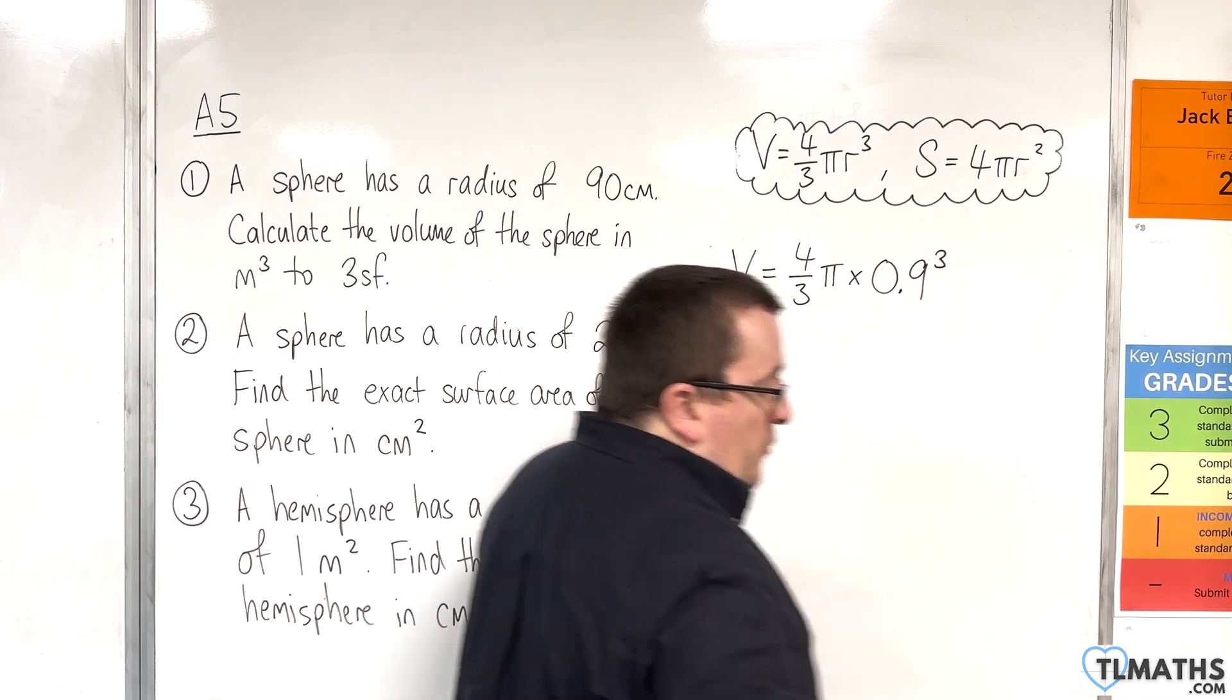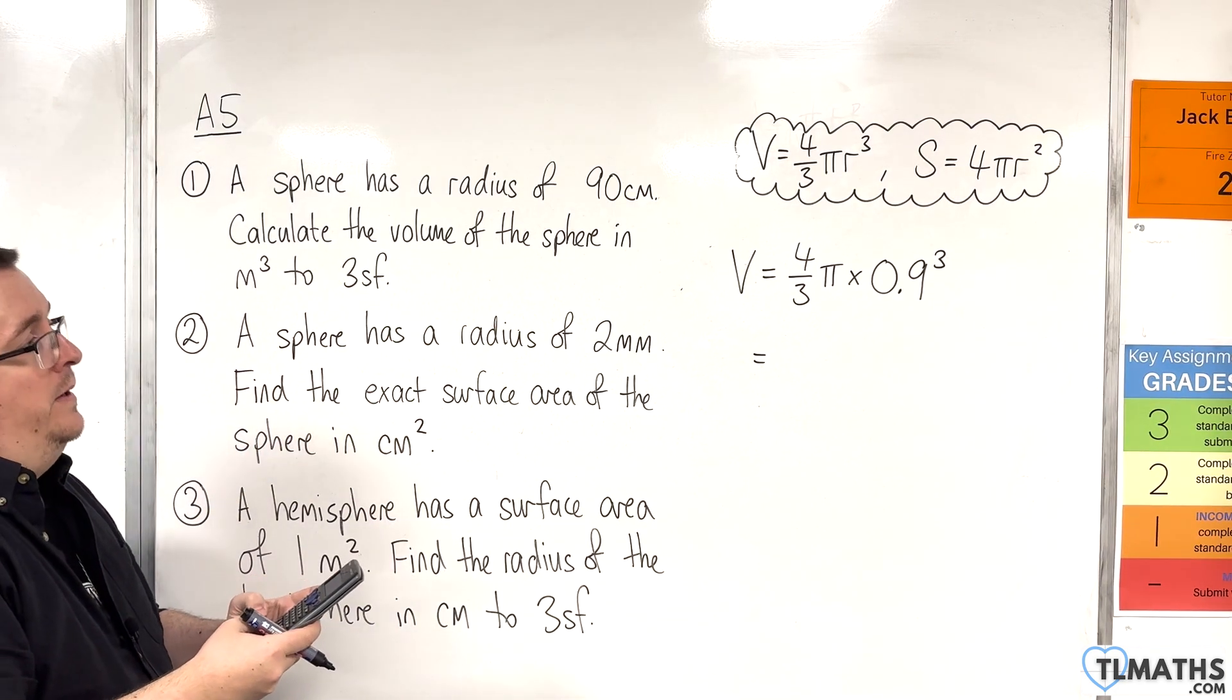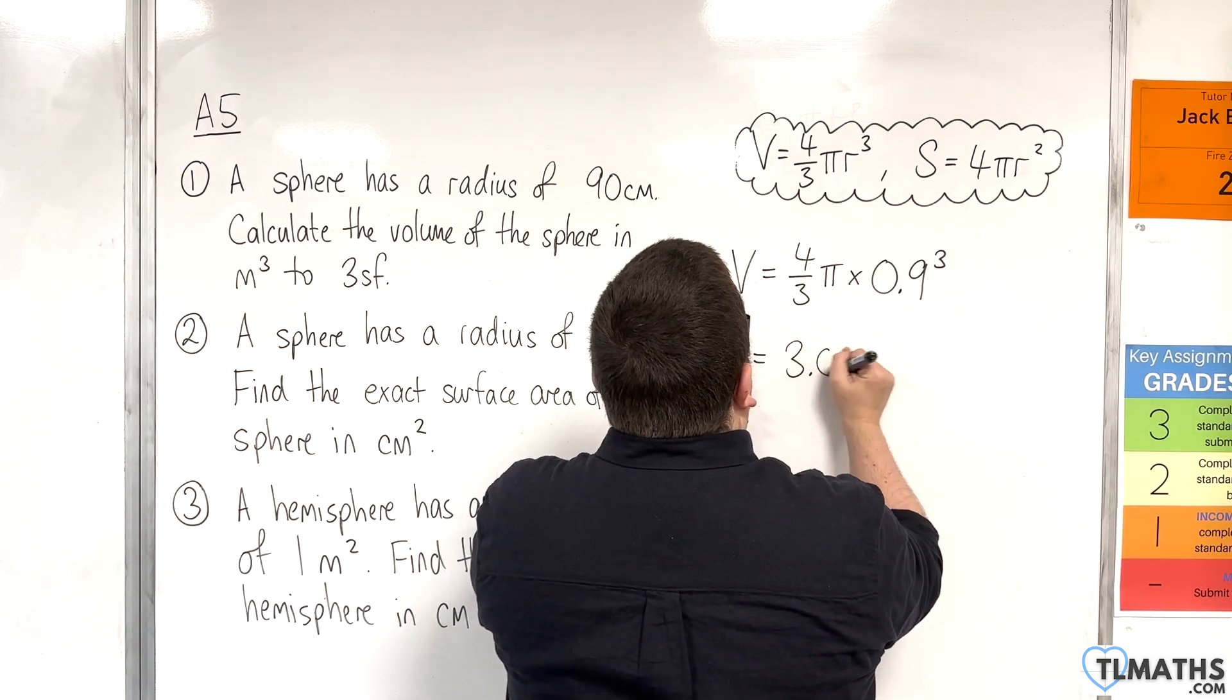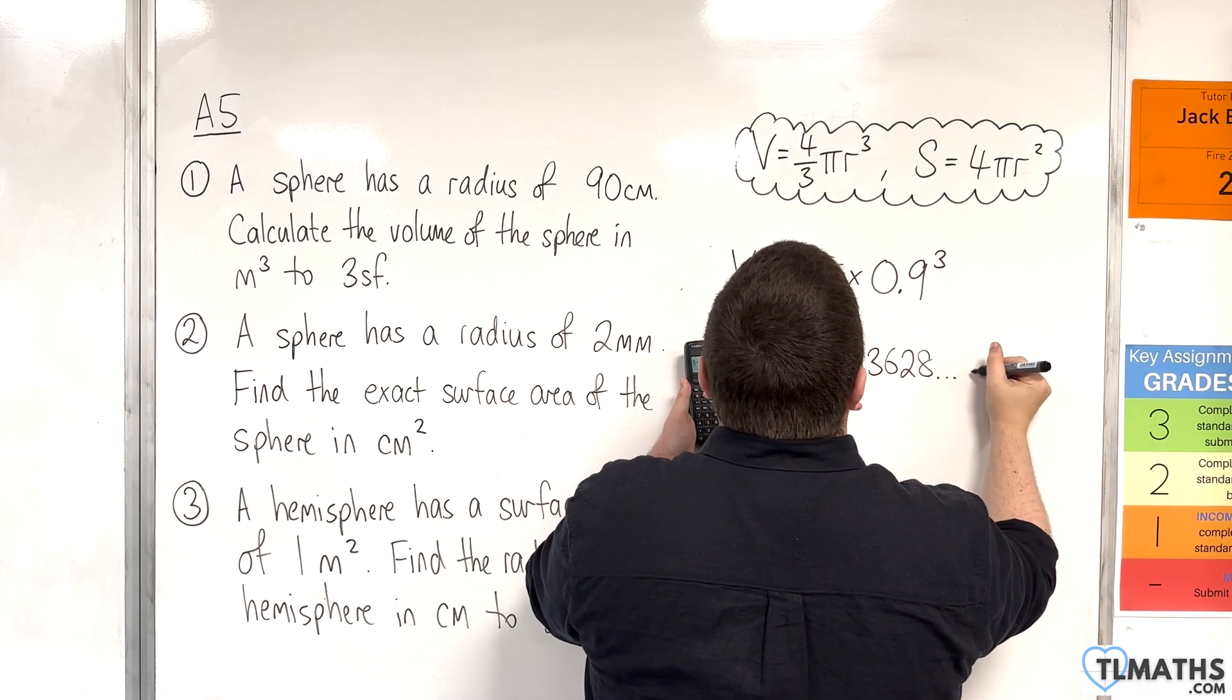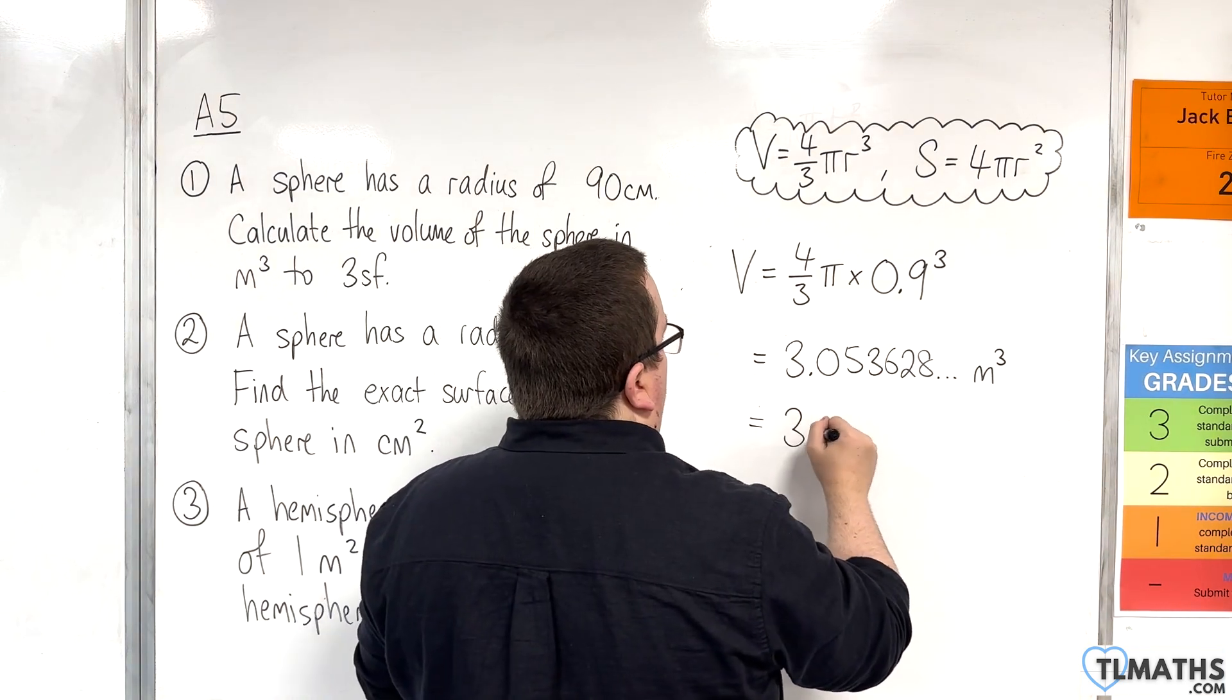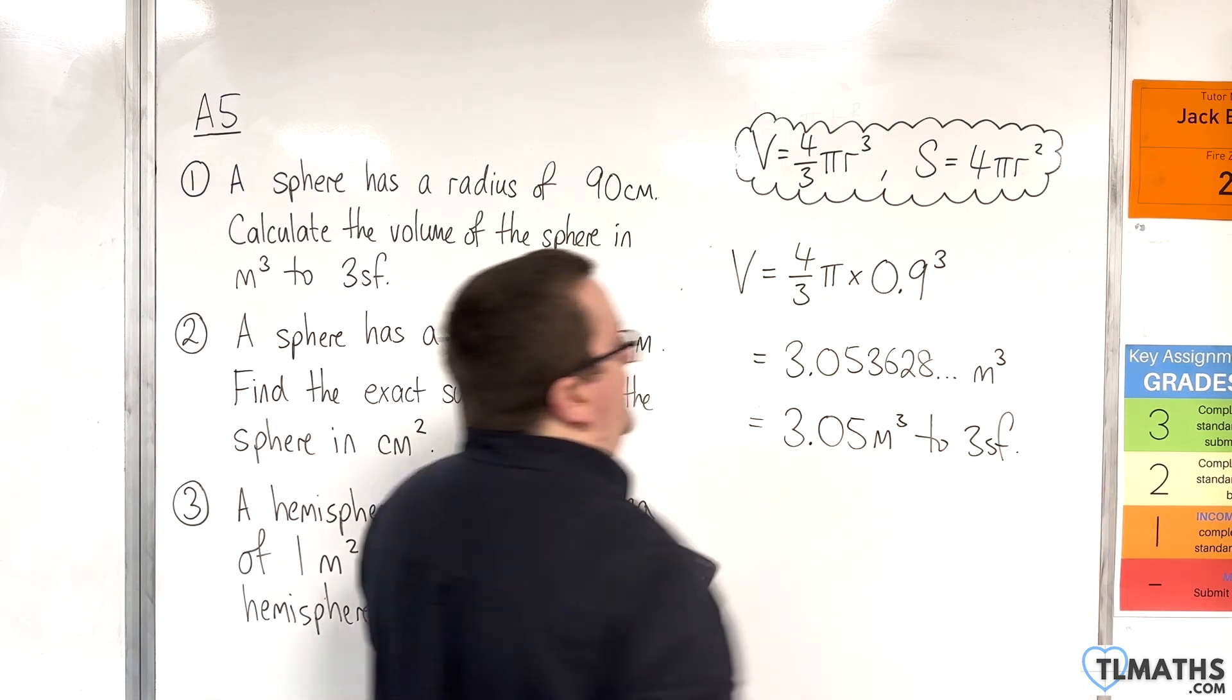And we want to give it to three significant figures, so I'm going straight to my calculator. 4 thirds times pi times 0.9 cubed. And we get 3.053628, etc. Now that's in cubic meters, but we want it to three significant figures. So that's 3.05 cubic meters to three significant figures.